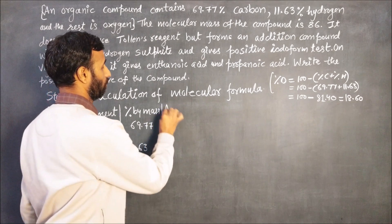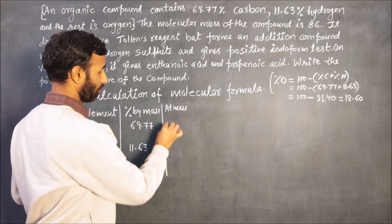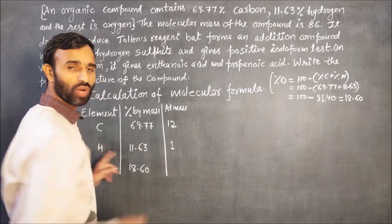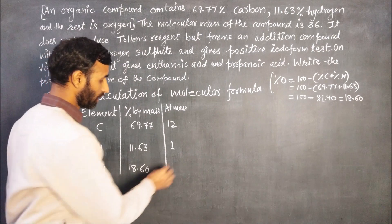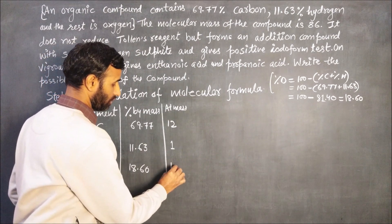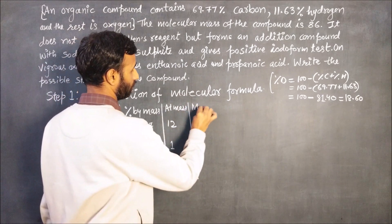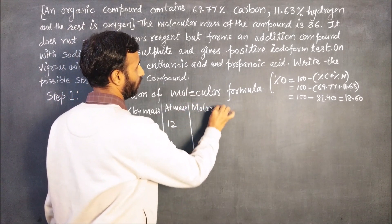Now atomic mass, carbon is 12, hydrogen it is 1, for oxygen it is 16. Now molar ratio, to calculate molar ratio, just divide percentage by mass to the atomic mass.